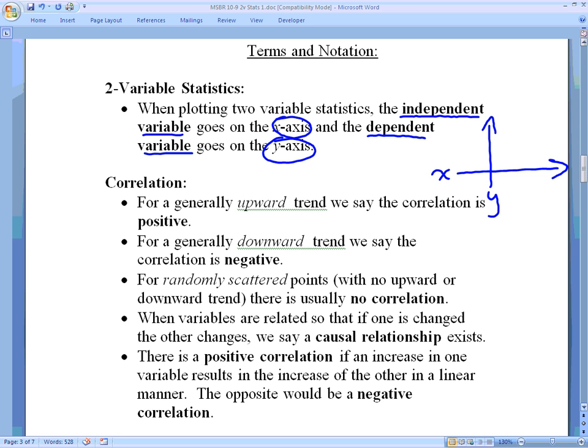For example, if we were doing my earlier analogy of profits and time, time is something we can't control. So that would probably be the x-axis, the independent, and the profits are the ones that are affected or dependent on the amount of time or years that have passed.